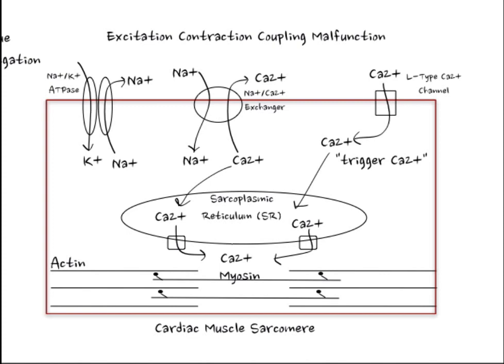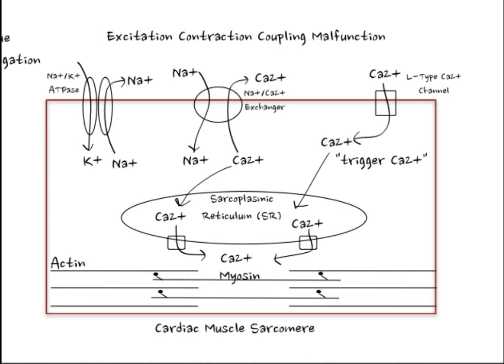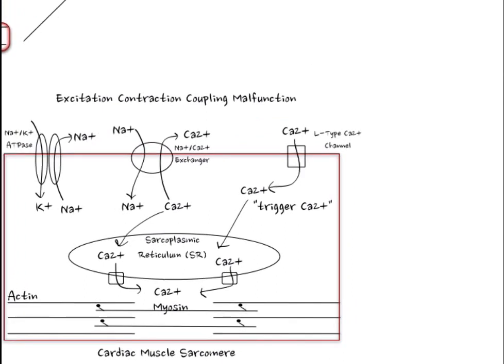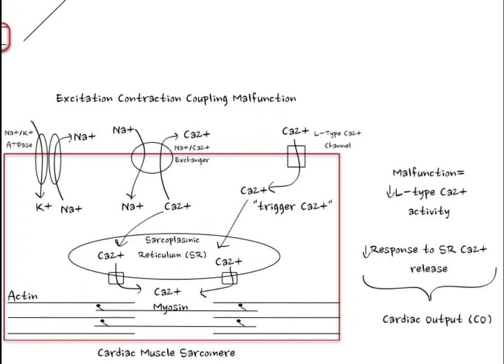In heart failure, a few of these steps are malfunctioning. First, L-type calcium channels are less active in responding to excitation. Second, the response to calcium released from the sarcoplasmic reticulum is decreased, leading to decreased contraction capacity. Overall, these two malfunctions decrease cardiac output.